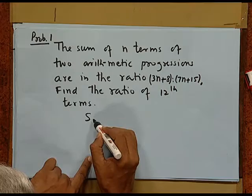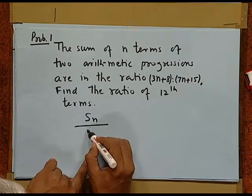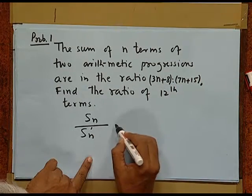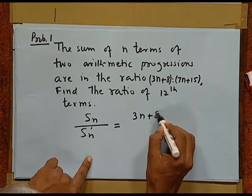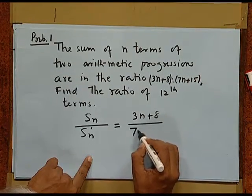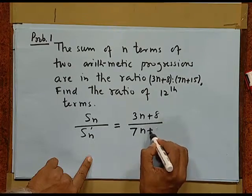Suppose the first term of the first series is a and common difference is d. For the second series, the first term is a' and common difference is d'. We are given that S_n / S'_n is equal to (3n + 8) / (7n + 15).